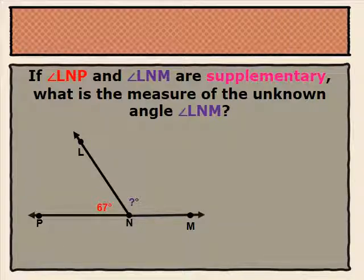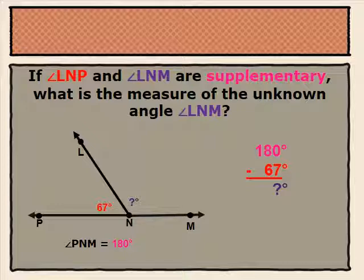If angle LNP and angle LNM are supplementary, what is the measure of the unknown angle, angle LNM? Again, we know that supplementary angles have a sum of 180 degrees, meaning that angle LNP plus angle LNM will give us 180 degrees together. So angle PNM is 180 degrees. To find our unknown angle, we subtract our known angle: 180 degrees minus 67 degrees gives us a total of 113 degrees.